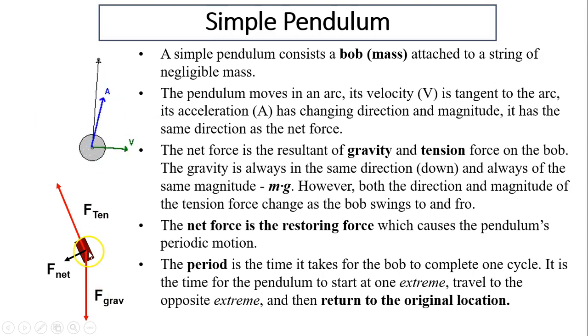So what is the net force? At any point, there are two forces acting on the bob: tension force and gravity. These two forces added together give us the net force. Gravity is constant, its magnitude is mg downward, but tension is always changing as the bob goes back and forth. And therefore, net force changes. The net force actually is the restoring force to make this pendulum vibrating.